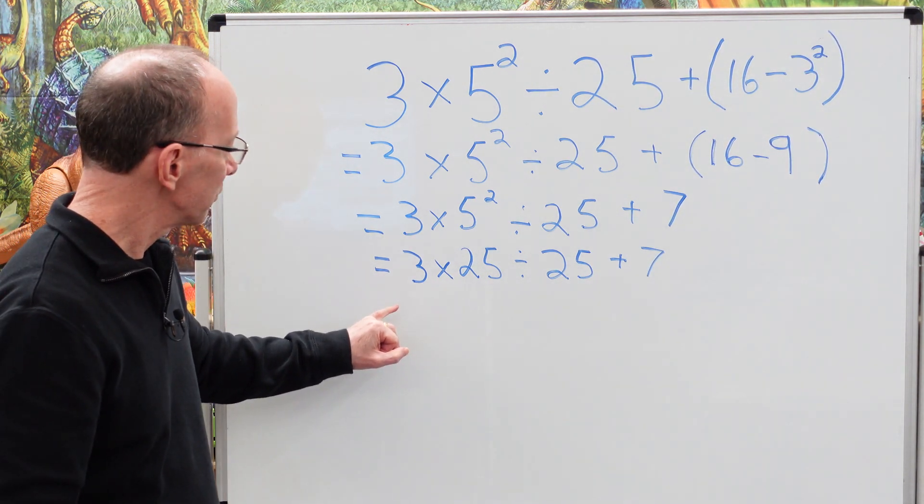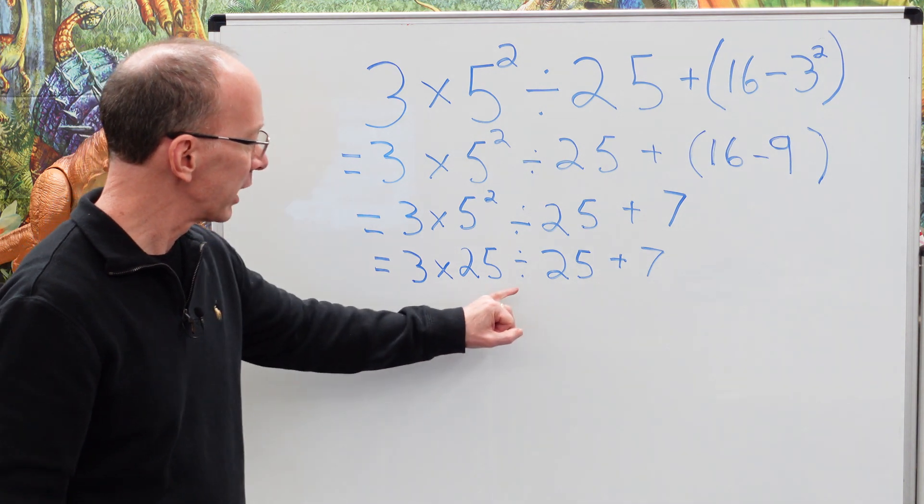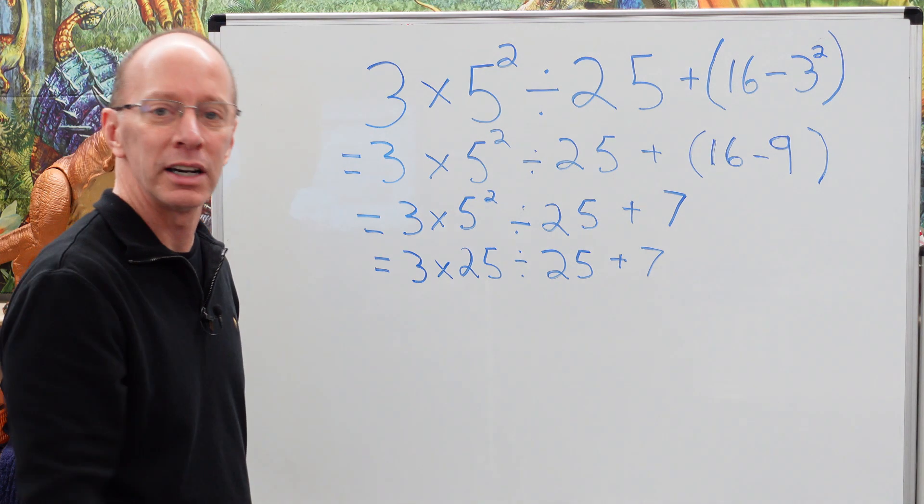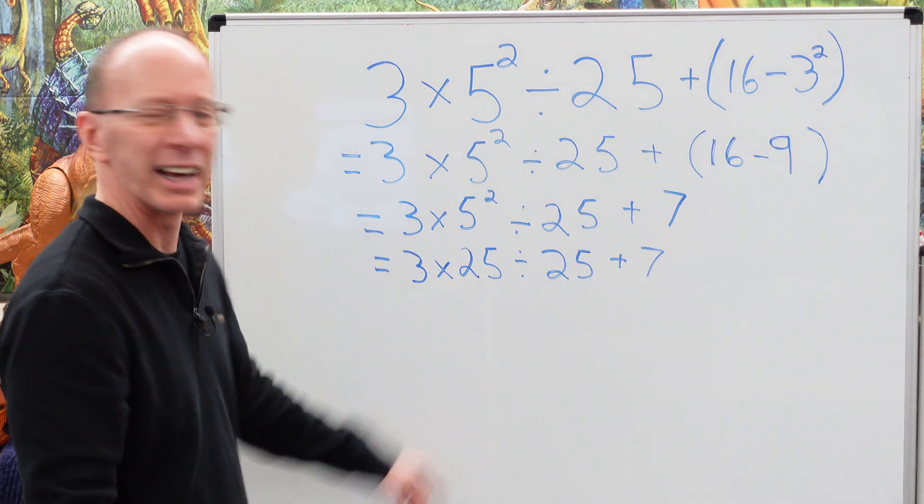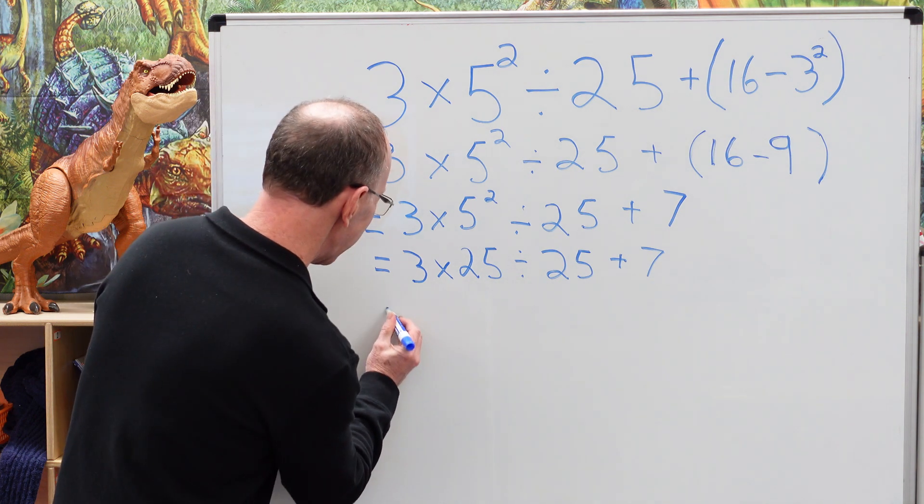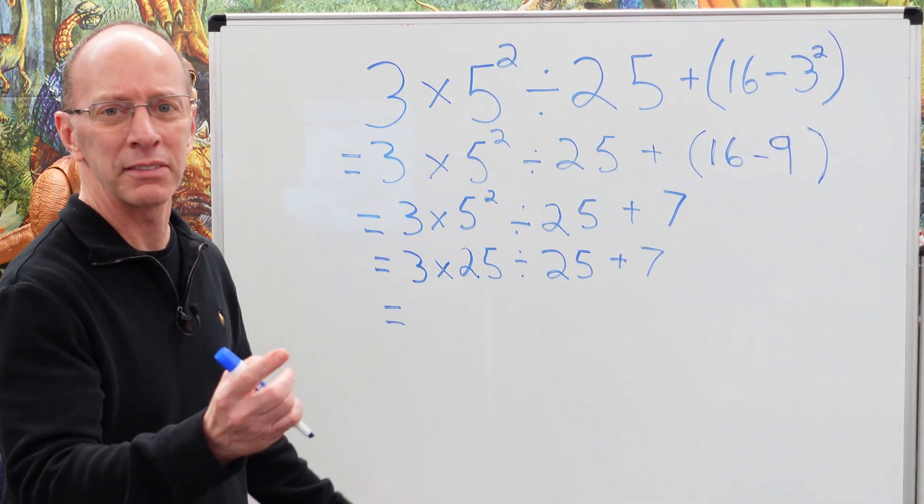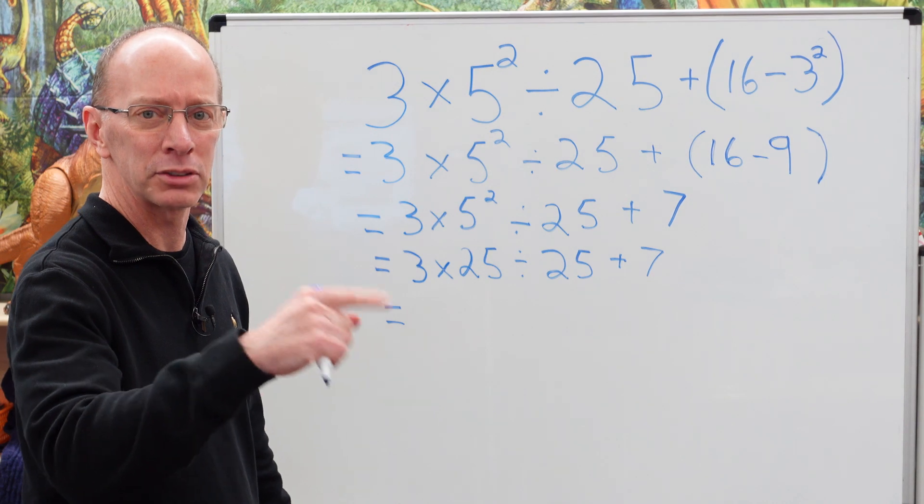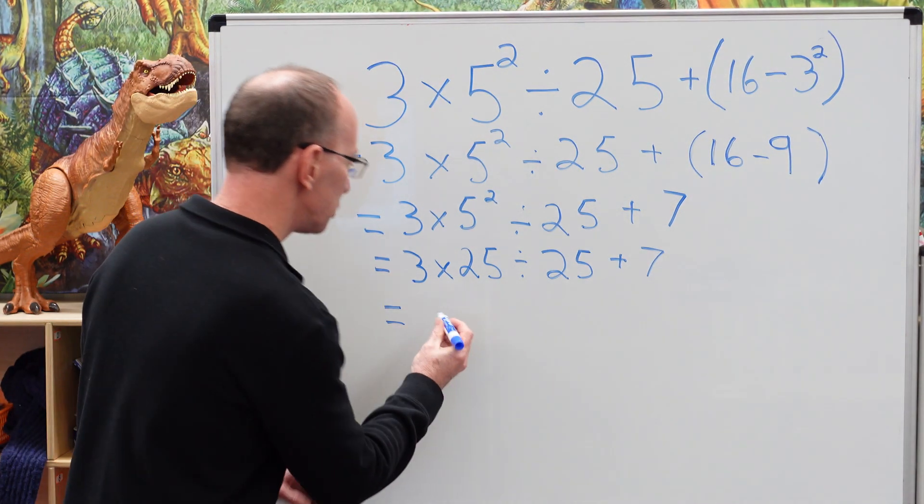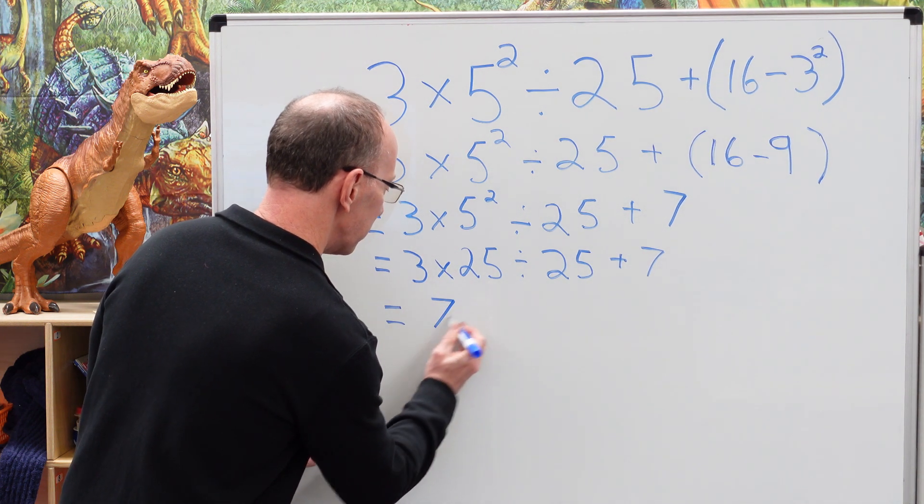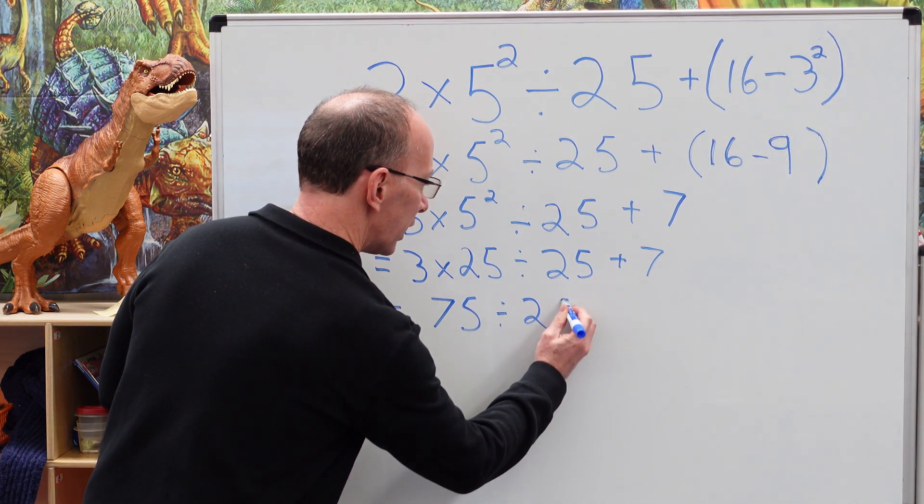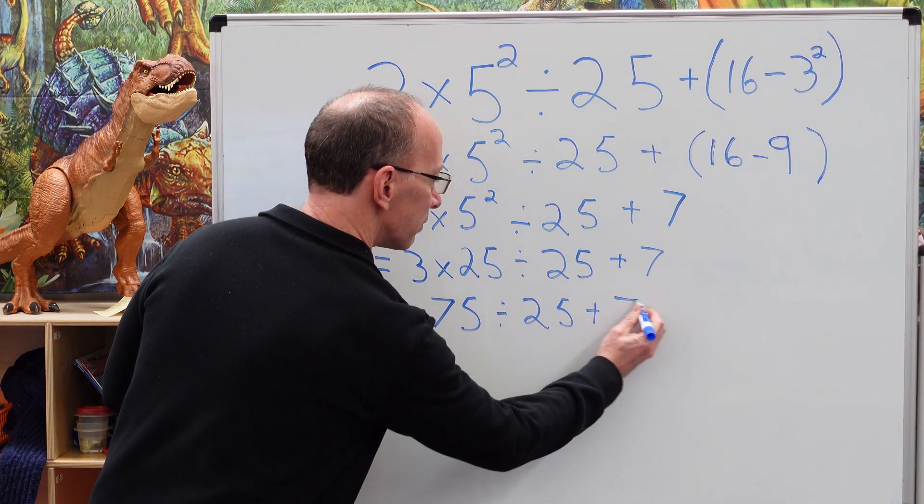What do we do next? Next, we've got multiplication, we've got division and addition. Let's just, from left to right, do our multiplication and our division. Three times 25, that's like quarters, like 25 plus 25 is 50 and another 25 is 75. So three times 25 is 75 divided by 25 plus 7.